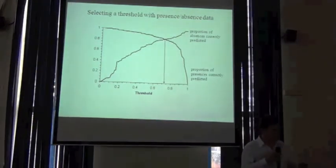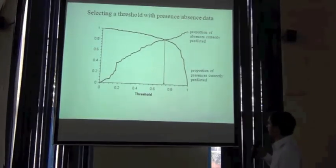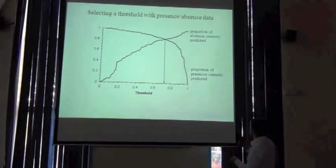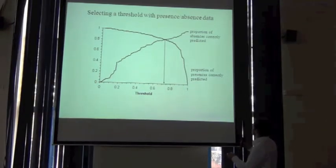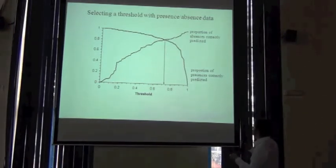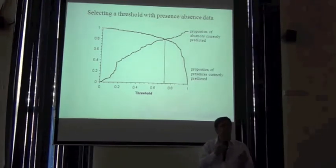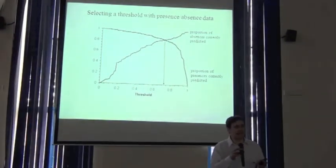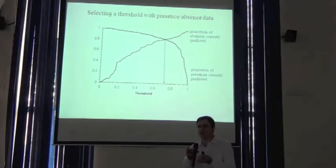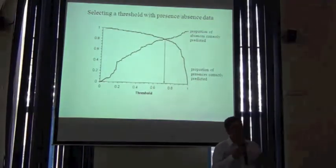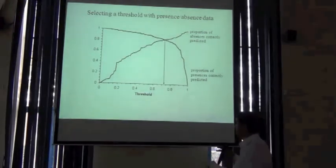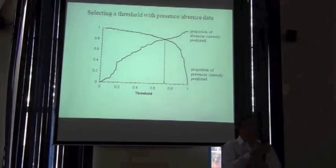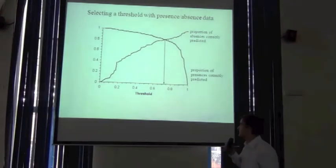You can look at these plots with your own data and ask: how well are we doing with the presences, and how well with the absences, as we change the threshold? We can use criteria like balancing the two — looking at where the two graphs cross, or taking a threshold that maximises the sum of both values, finding the best balance between correctly predicting presences and correctly predicting absences.